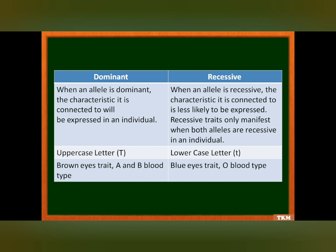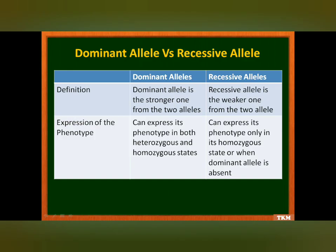When an allele is dominant, the characteristic it is connected to will be expressed in an individual. Whereas when an allele is recessive, the characteristic is less likely to be expressed unless both alleles are recessive. The dominant allele is usually represented by an upper case letter, whereas a recessive allele is represented by a lower case letter. The dominant allele can express its phenotype in both heterozygous and homozygous states, whereas the recessive one can express its phenotype only in the homozygous state or when the dominant allele is absent.